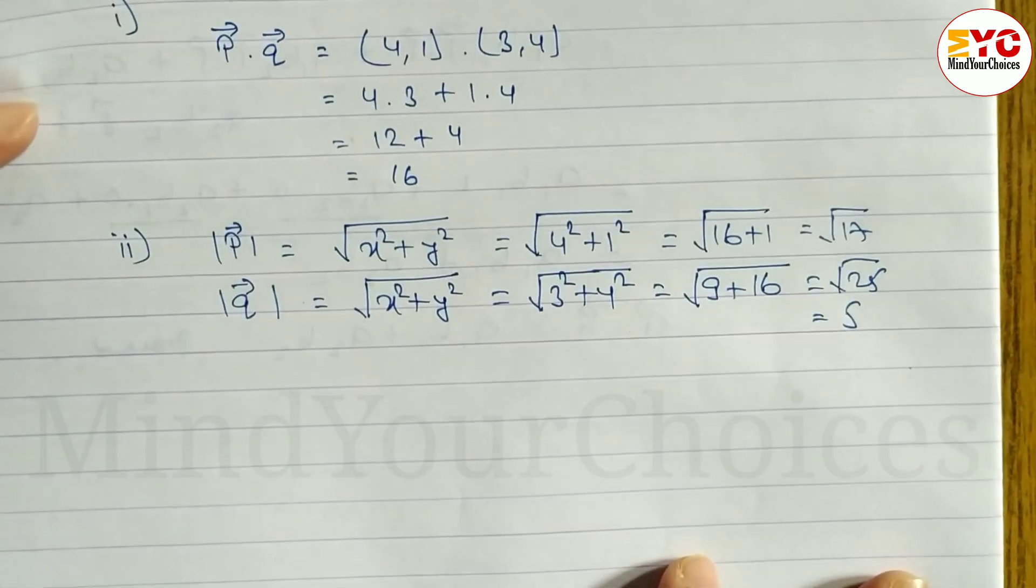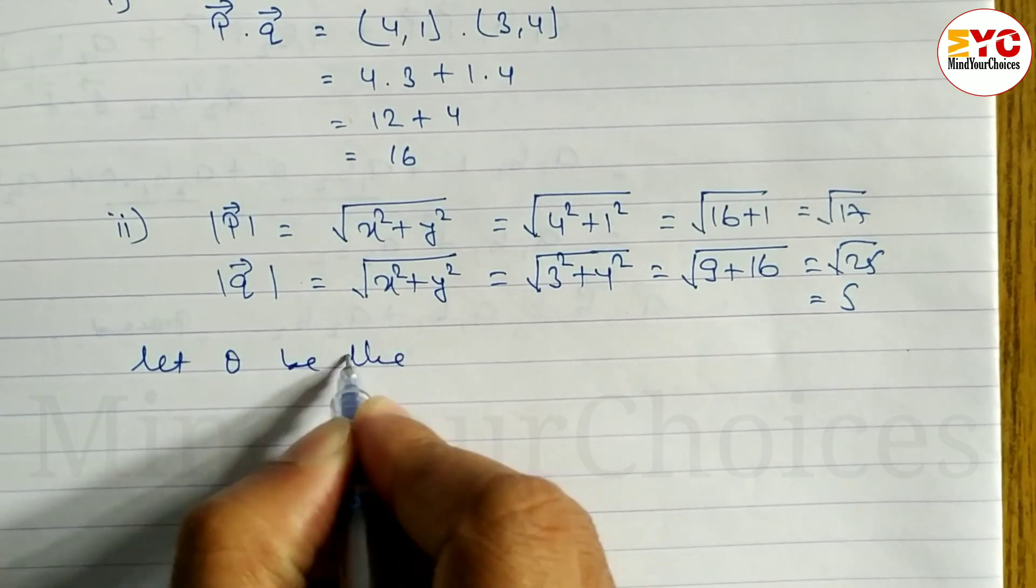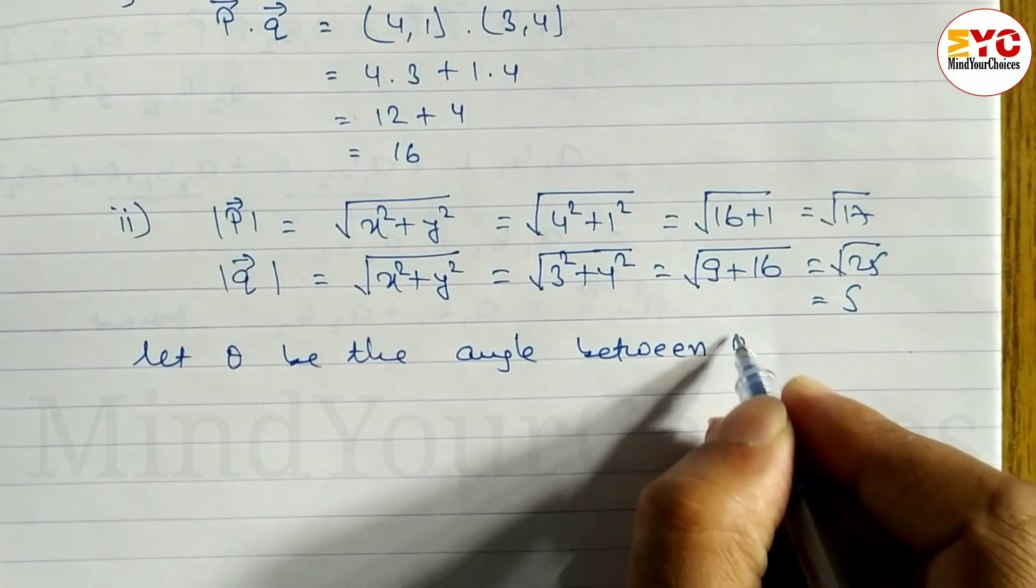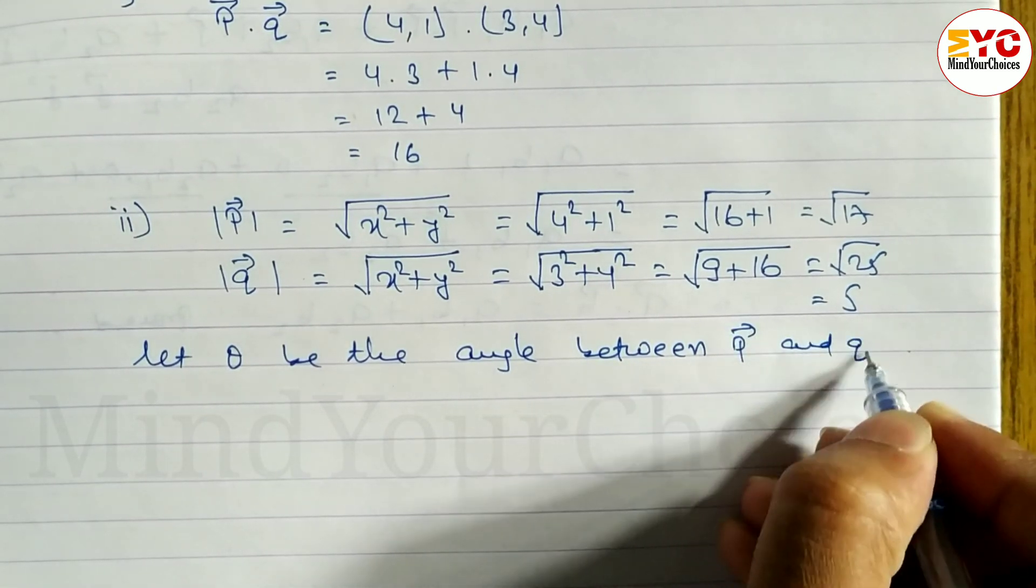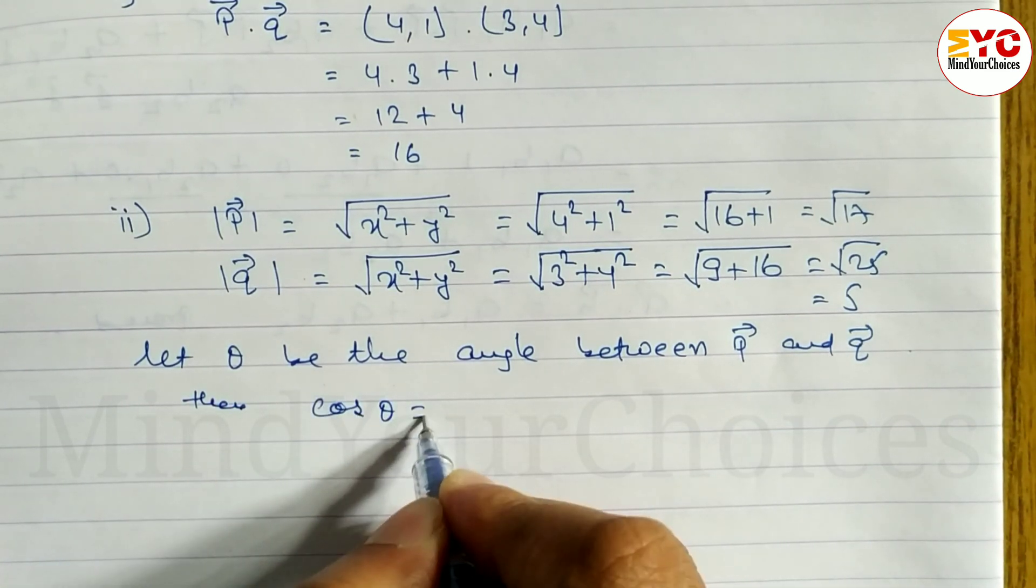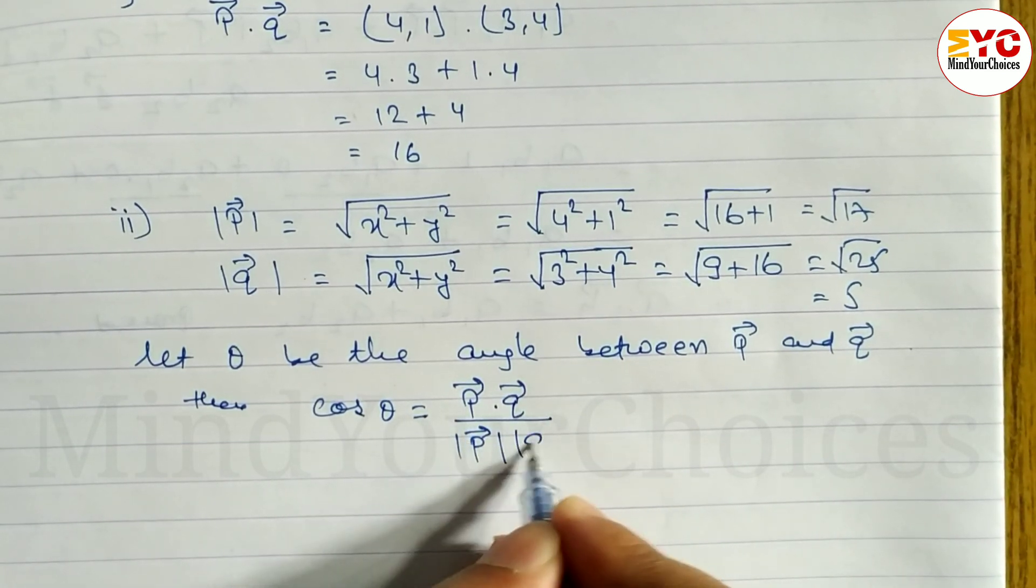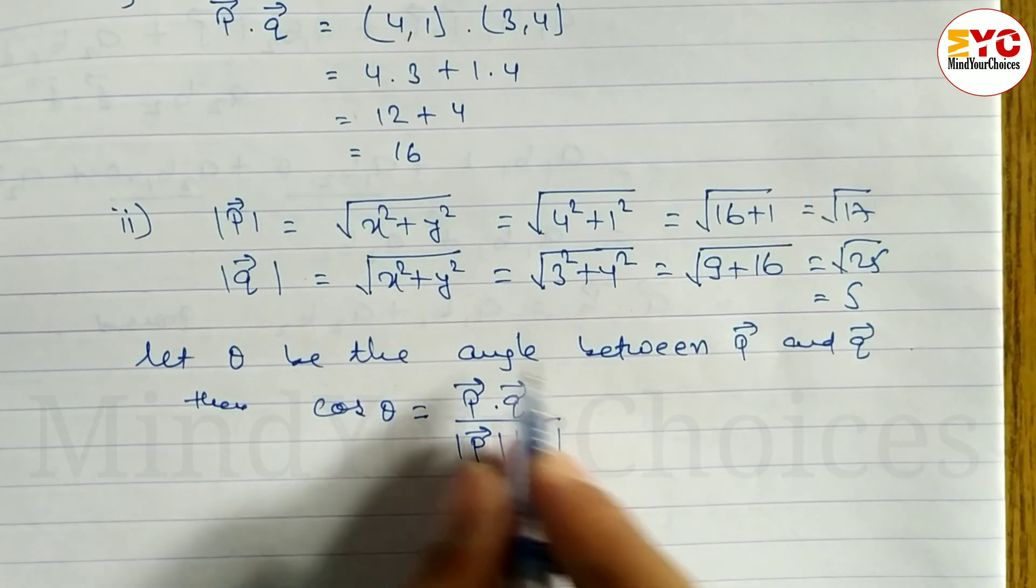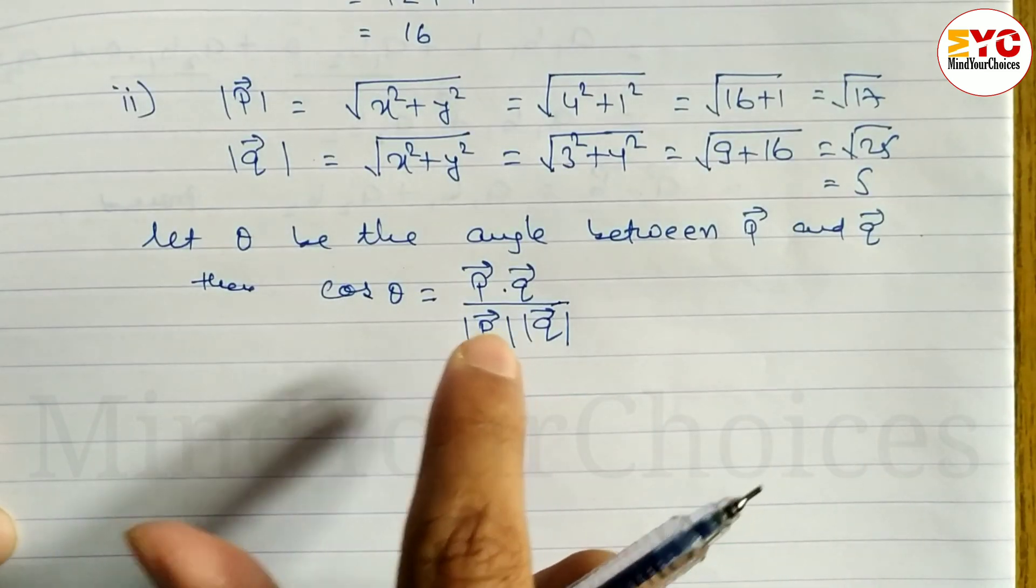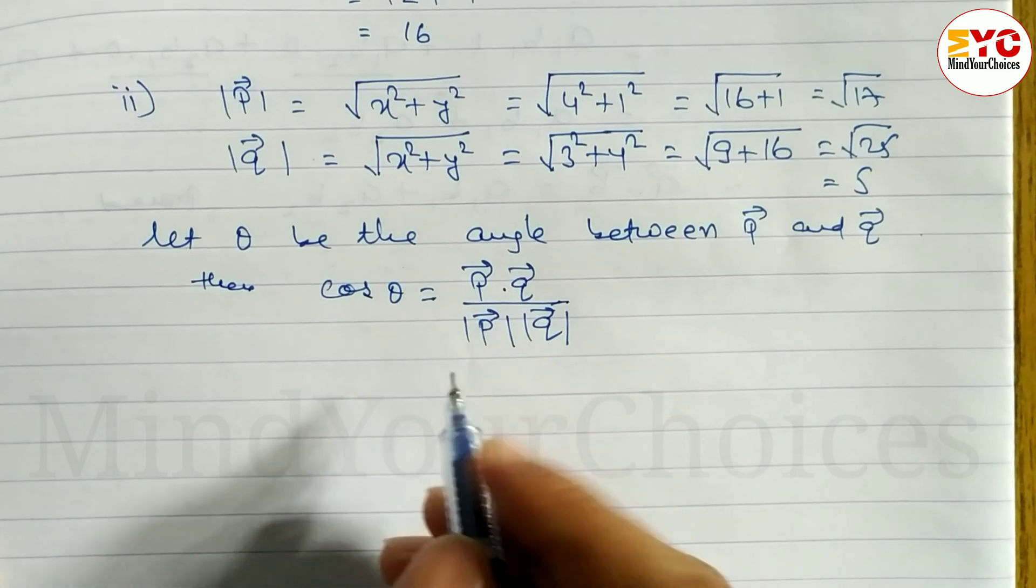Let theta be the angle between vector P and vector Q. Then the formula is cos theta equals scalar product of P and Q divided by magnitude of P times magnitude of Q. This is the formula to find angle between two vectors.